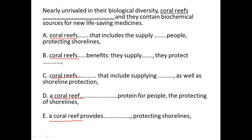Whenever we have a singular-plural noun error in the non-underlined part of the sentence, you will always have a pronoun that will help you decide whether to use a singular noun or a plural noun. So go back to the main sentence — it says nearly unrivalled in their biological diversity. The pronoun is their, which is plural, so we need a plural noun. Eliminate a coral reef in D and E.